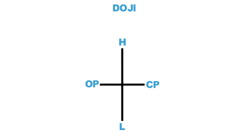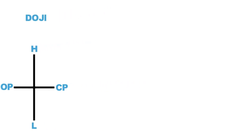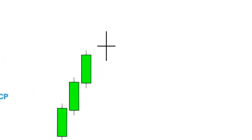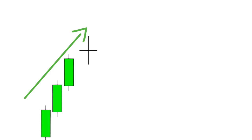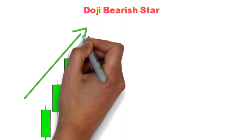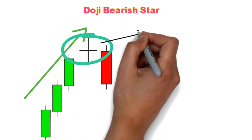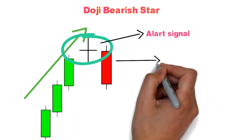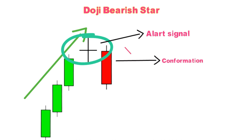Doji forms in an uptrend indicates bulls are tired. We don't know who comes into action next, so we wait for confirmation. When a doji followed by a bearish candle forms, then we exit the long position. So doji is an alert signal, and the bearish candle is the confirmation.